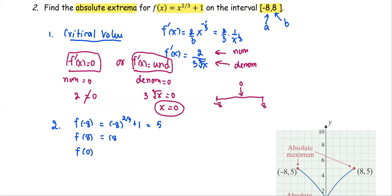For the value eight, 8^(2/3) + 1, we obtain equals five as well. And the function value at zero is going to be zero plus one, or one.